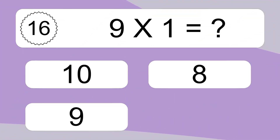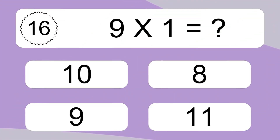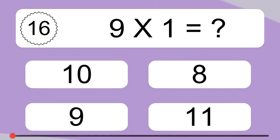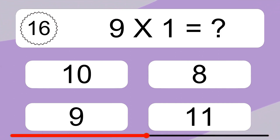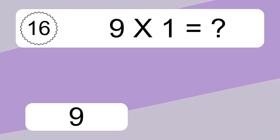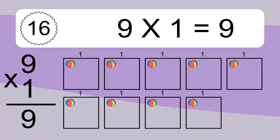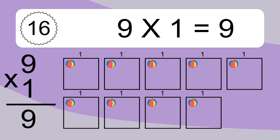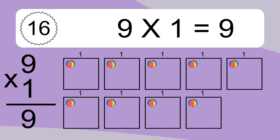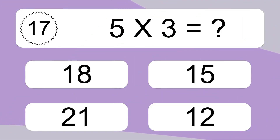9 x 1 equals what? 9 x 1 equals 9. We have 9 boxes, and each box has 1 colorful ball inside. If you count all the balls in all the boxes together, you will have 9 x 1 balls. This equals 9 balls.